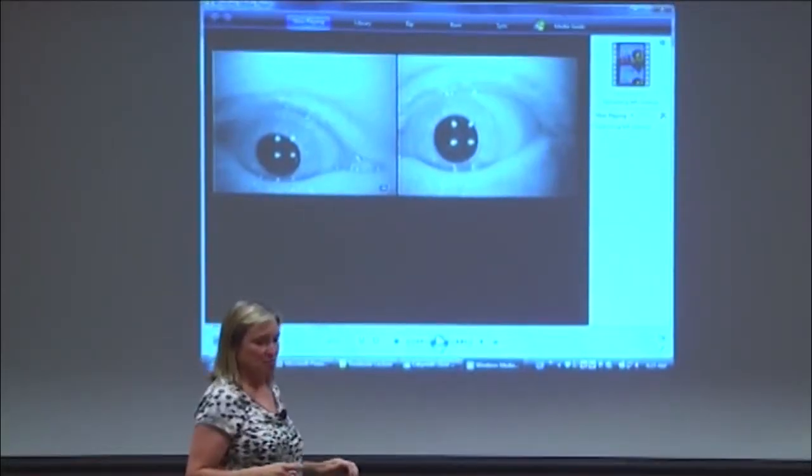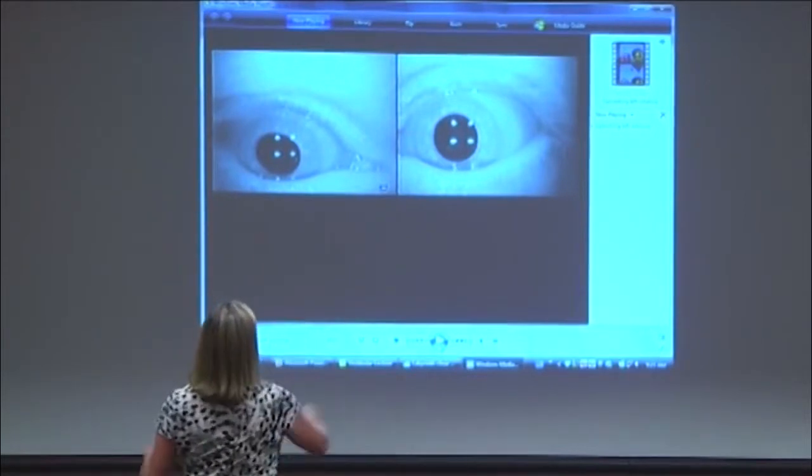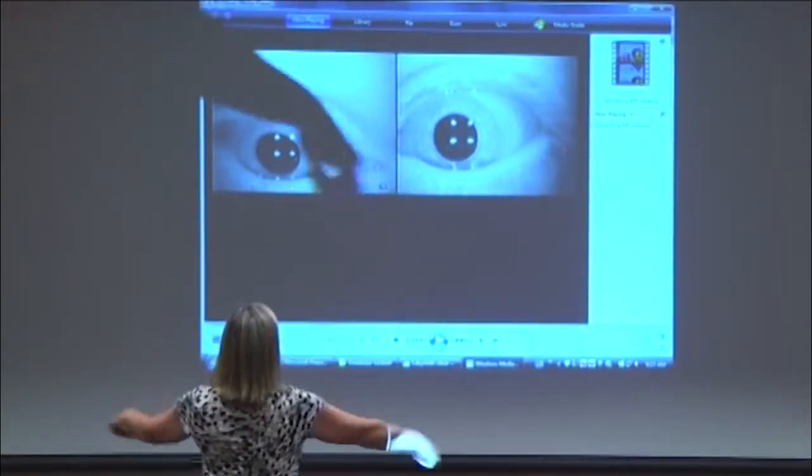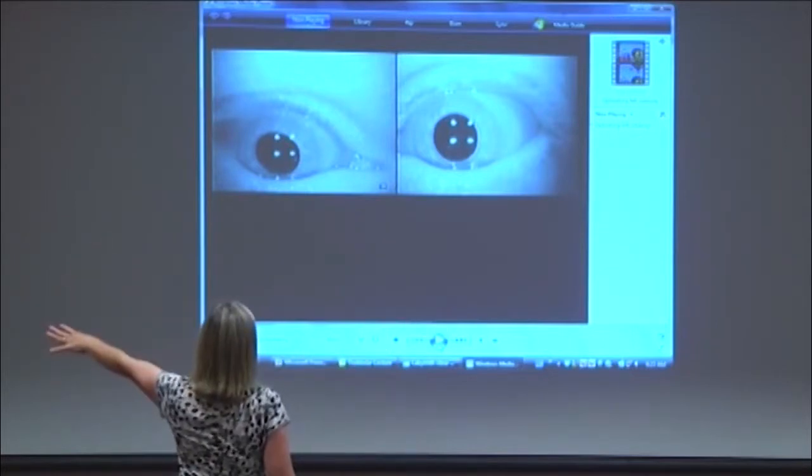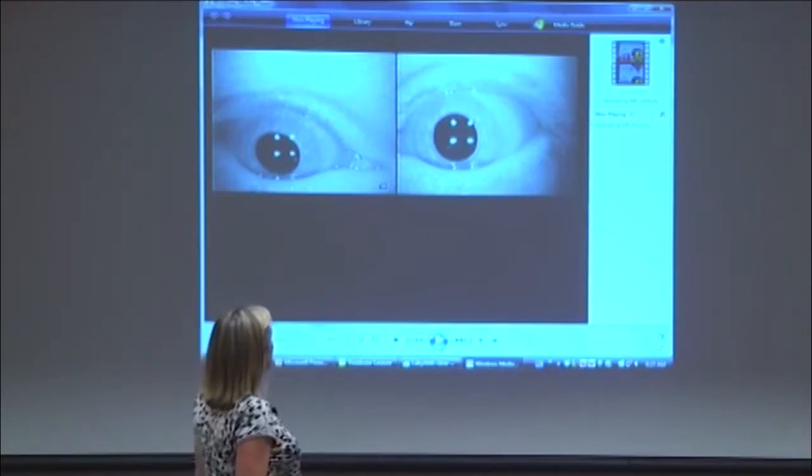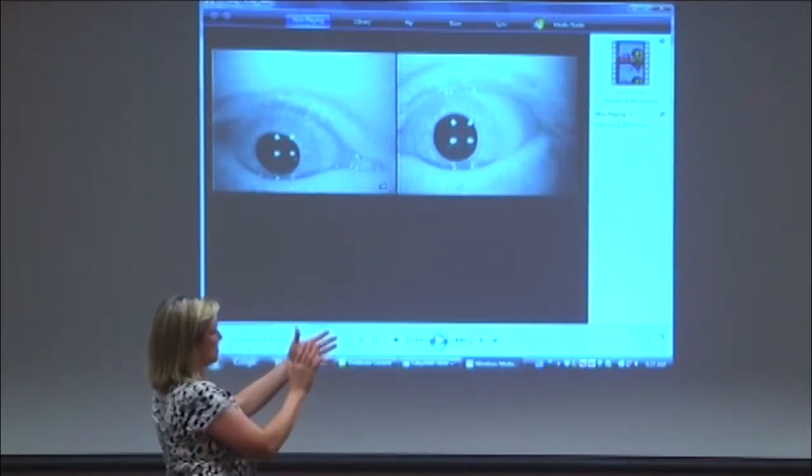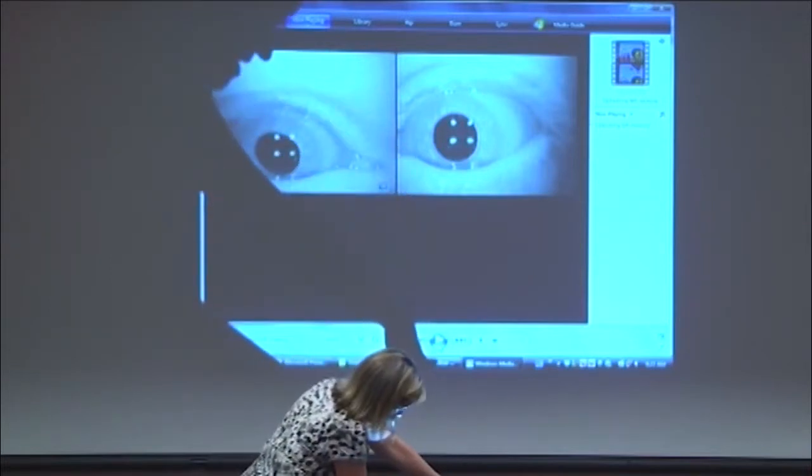Okay, so let's orient yourself. There's your nose, there's the ears - left ear, right ear. This is a left Hallpike, so the person's head is to the left and they're bent back like this.